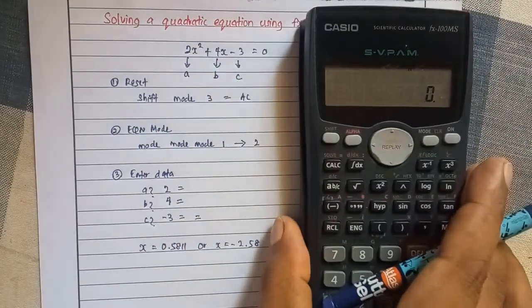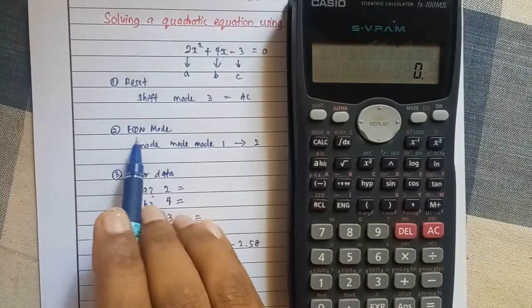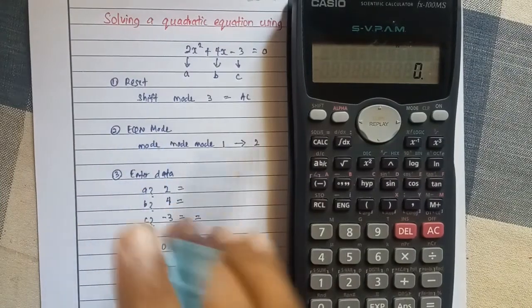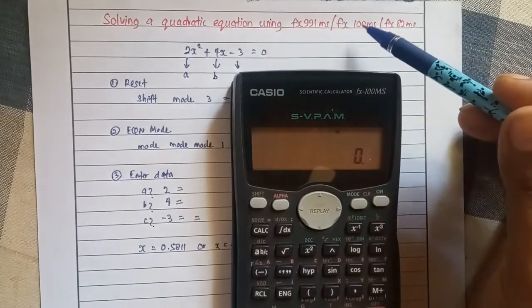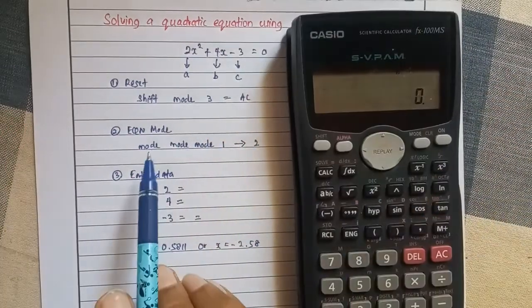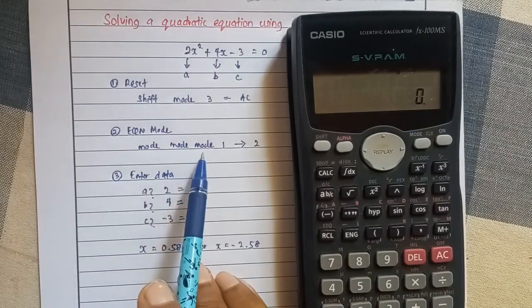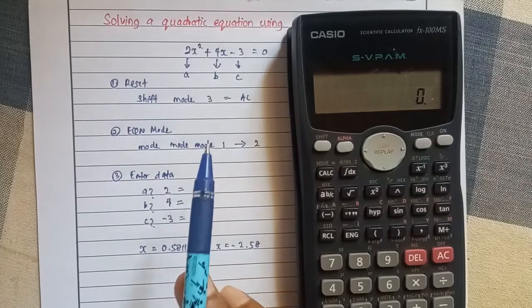Then, as the next step, you need to change the mode of the calculator to the equation mode. For these three versions, fx991ms, fx100ms, and fx82ms, once you press this mod button 3 times, you should be able to see EQN on your calculator display.